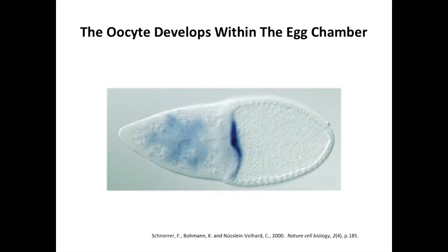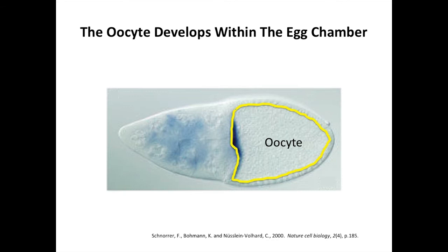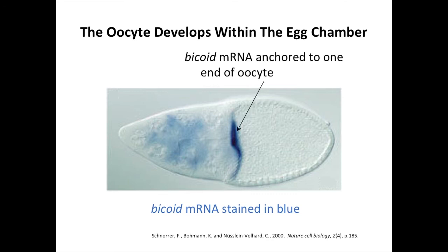In the mother, the egg, or oocyte, develops within a structure referred to as an egg chamber. In the egg chamber, the oocyte is connected to a special group of germline cells called the nurse cells, outlined here in purple. The nurse cells provide nourishment and cytoplasmic components to the oocyte, outlined here in yellow. The mother transcribes the Bicoid gene in these nurse cells, and this Bicoid mRNA is distributed to the oocyte, where it is present in the cytoplasm but not translated until after fertilization. As you can see in this image, in which the Bicoid RNA is stained blue, the Bicoid RNA is localized and anchored at one end of the developing embryo — a newly fertilized egg. This localization and anchoring of the Bicoid messenger RNA involves the cytoskeleton, the microtubules in particular.